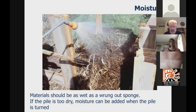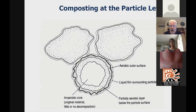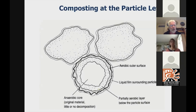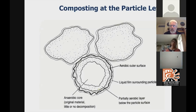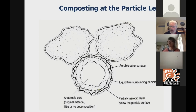Looking at composting on a particle basis: we see the film of moisture that surrounds each particle, and that's where the composting organisms or bacteria live. Without that film, there is no composting. If we put too much water in, or add ashes, it fills up the spaces between the particles and the system can go anaerobic, which excludes oxygen, creating a little odor and slowing the whole process down.